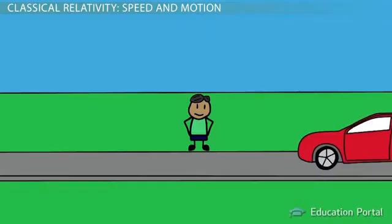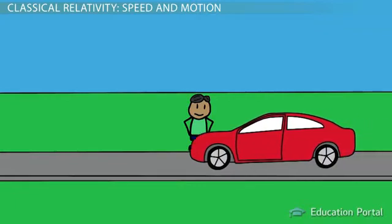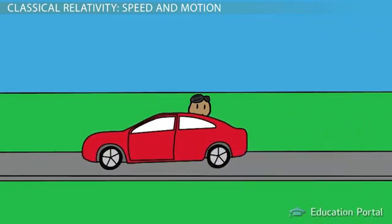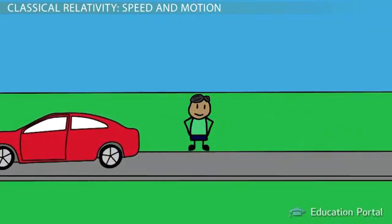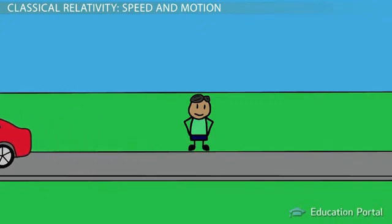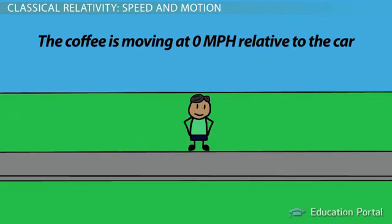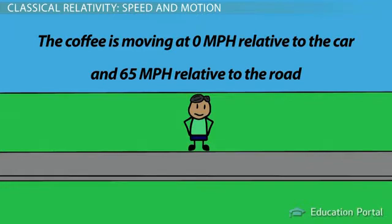If someone were watching you drive by, he would observe the coffee moving at a velocity of 65 miles per hour, that is the same velocity of the car. Both perspectives are correct. The coffee is moving at zero miles per hour relative to the car and 65 miles per hour relative to the road.